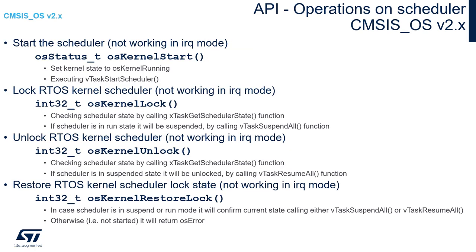The next group of functions: the most important one is osKernelStart, which starts the operating system. It cannot be executed from an interrupt. This function sets the kernel state to osKernelRunning and executes vTaskStartScheduler from the FreeRTOS API. The second function, osKernelLock, is used to freeze the operating system by suspending all tasks. The third one, osKernelUnlock, reverses this process by resuming all tasks. To check the current lock state of the kernel, we can use the osKernelRestoreLock function.